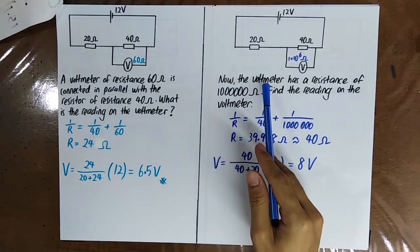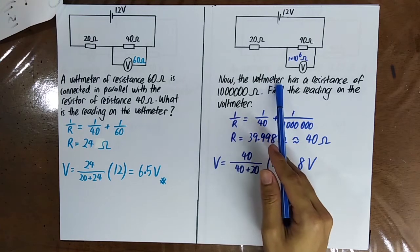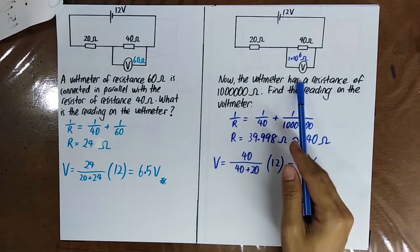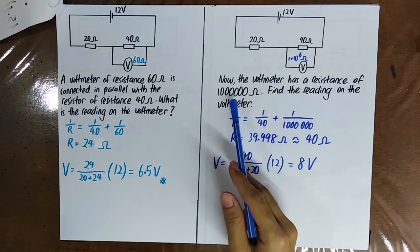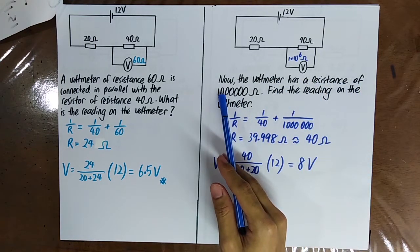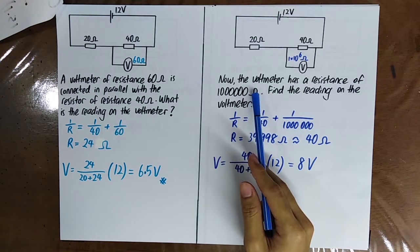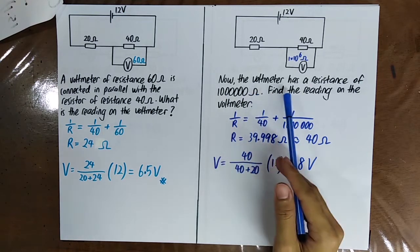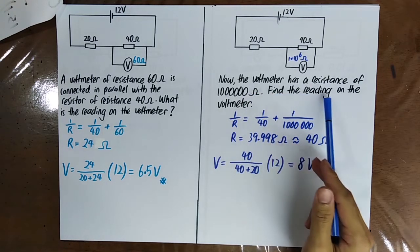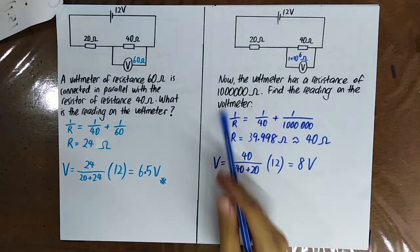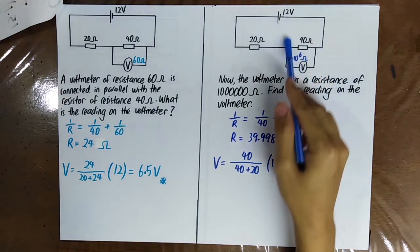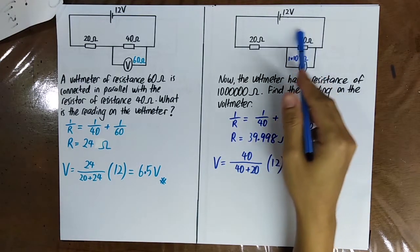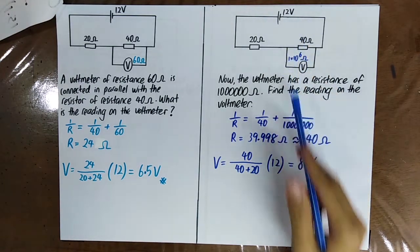And then the voltmeter now has a resistance of 1 million ohm. Find the reading on the voltmeter. So now, once again, you'll find the equivalent resistance here.